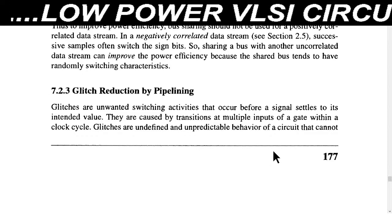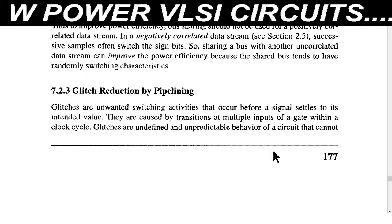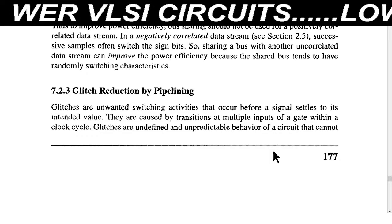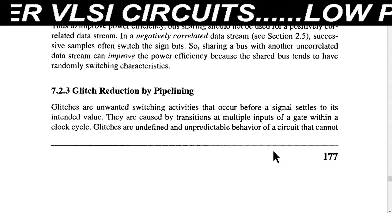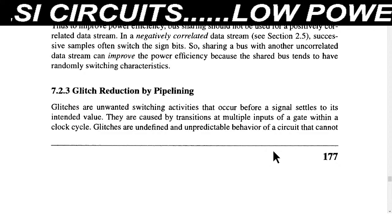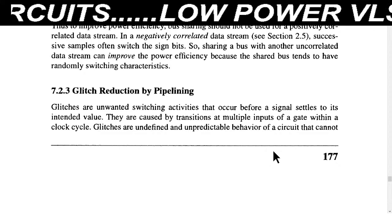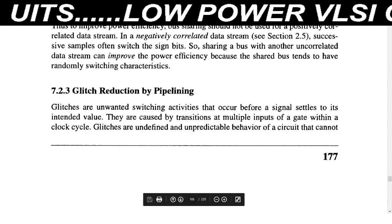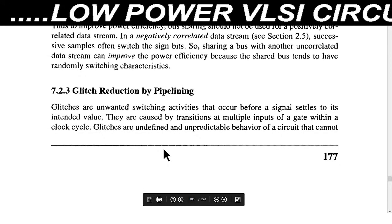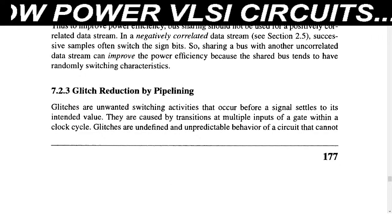In glitch reduction by pipelining, we are using a pipeline register on the input side instead of using the logic gates that work with different propagation delays. When we connect the pipeline register, the glitch will be reduced. This is all about the theoretical portion of switching activity reduction. In the next lecture we will discuss some other topic. Thank you.